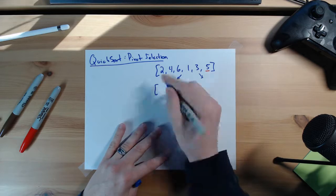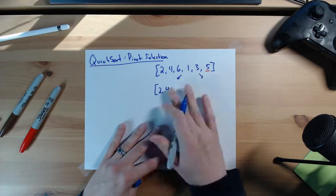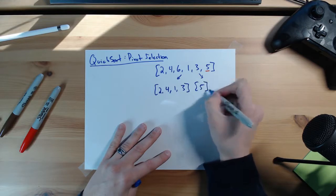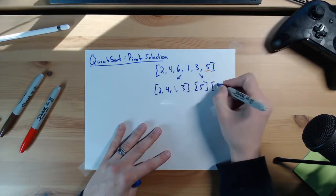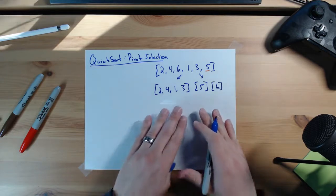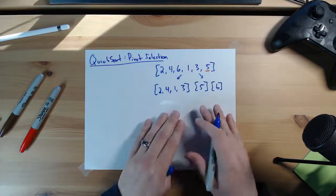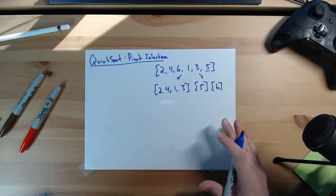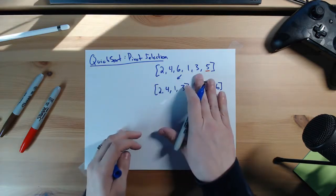All the elements that are smaller than 5, which is 2, 4, 1 and 3. We have 5 kind of in the middle here and then all the elements that are greater than 5, which is just the element 6. Right now this is okay. In an ideal situation, we'd probably split this nice and evenly between the two. So we'd ideally be picking probably 4 or 3.